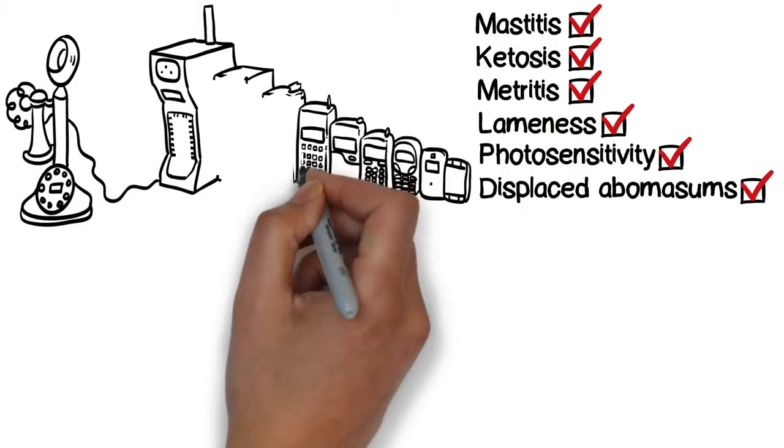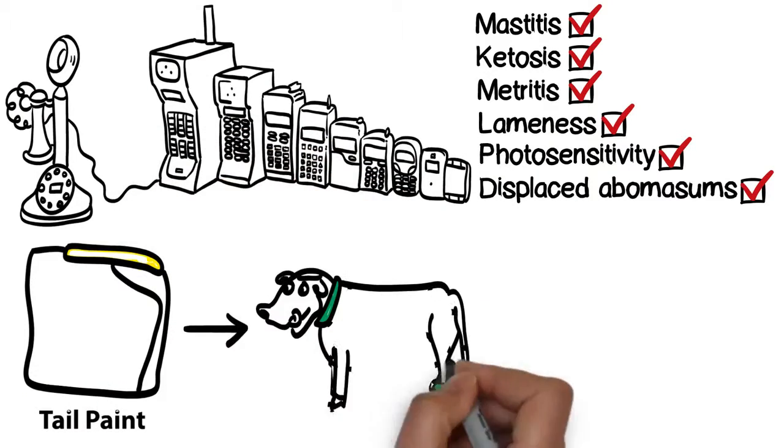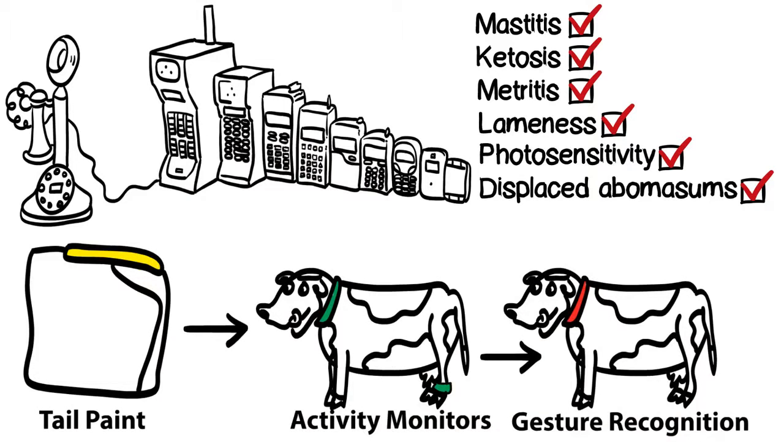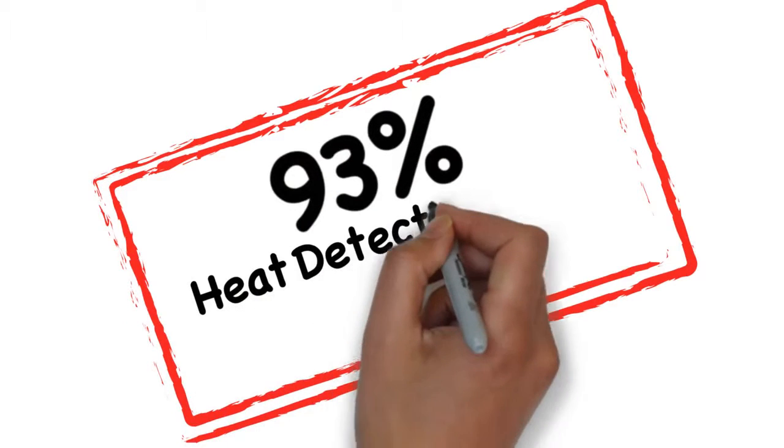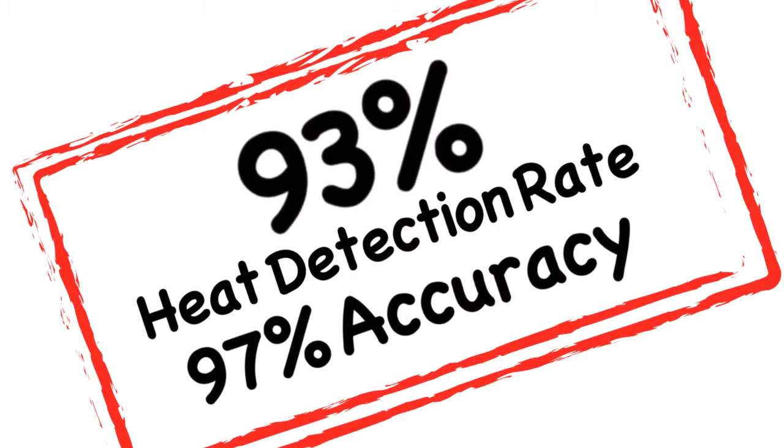The revolutionary new approach of conducting a multi-metric analysis has given Herd Insights the unique ability to accurately work out the health and reproductive status of each cow, enabling Herd Insights to become the most advanced heat detection and health monitoring solution available in the world today.